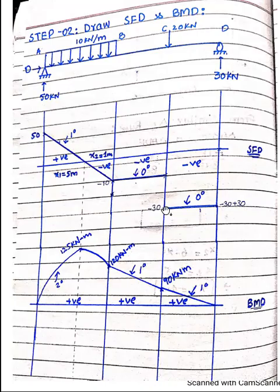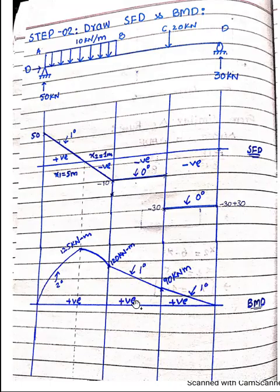Since the degree of shear force is zero in spans BC and CD, the bending moment diagram is drawn as a first-degree (straight) line. All bending moment diagram areas come out in the positive plane of reference.